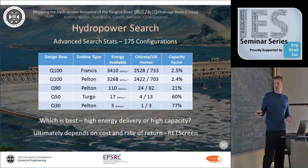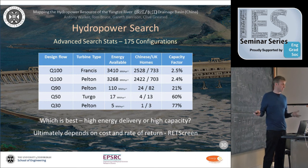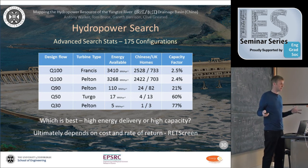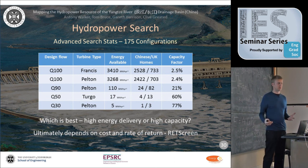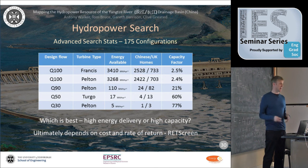At the other end, a low-flow Pelton turbine system might generate about 5 megawatt-hours per year — enough for one UK home or three Chinese homes based on current usage — but it operates 77% of the time. That could be cost-effective. We're using RETScreen, a Canadian model, to cost these projects. The goal is not just to find the highest energy output, but to identify economically viable schemes.